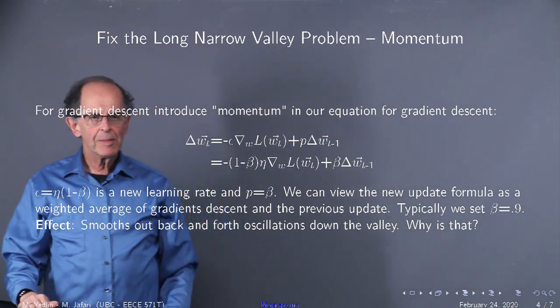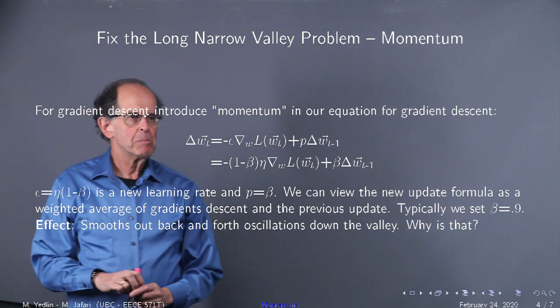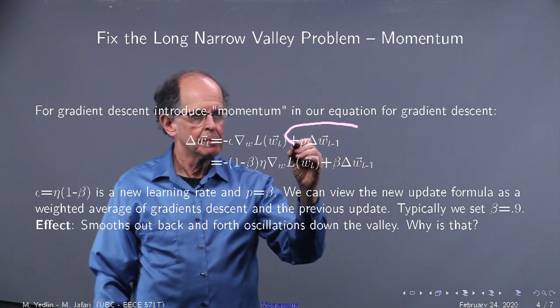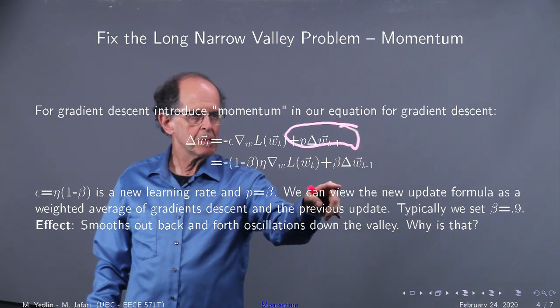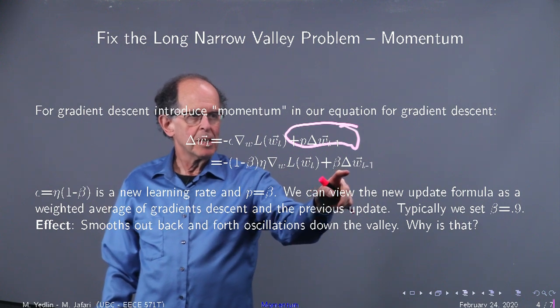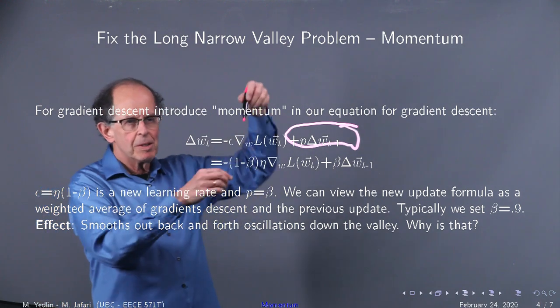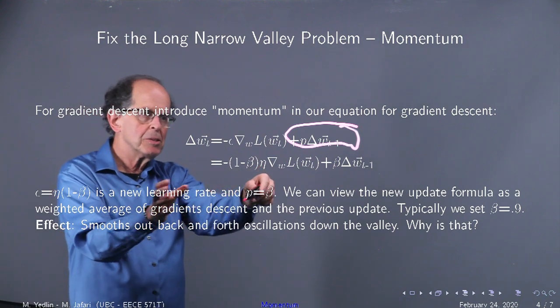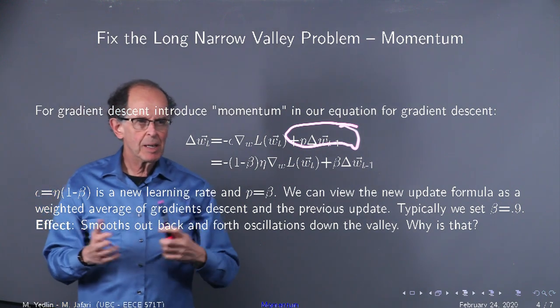What we're going to show in the next few slides is by adding momentum, and the momentum term is this term here. I've kind of overwritten it, but you can see it below using a different parameter. It's the change in the weights from the previous iteration step. So, if you're going somewhere, you'll keep going depending on the weight, and then you'll add a gradient term as well. So, that's the basic idea.